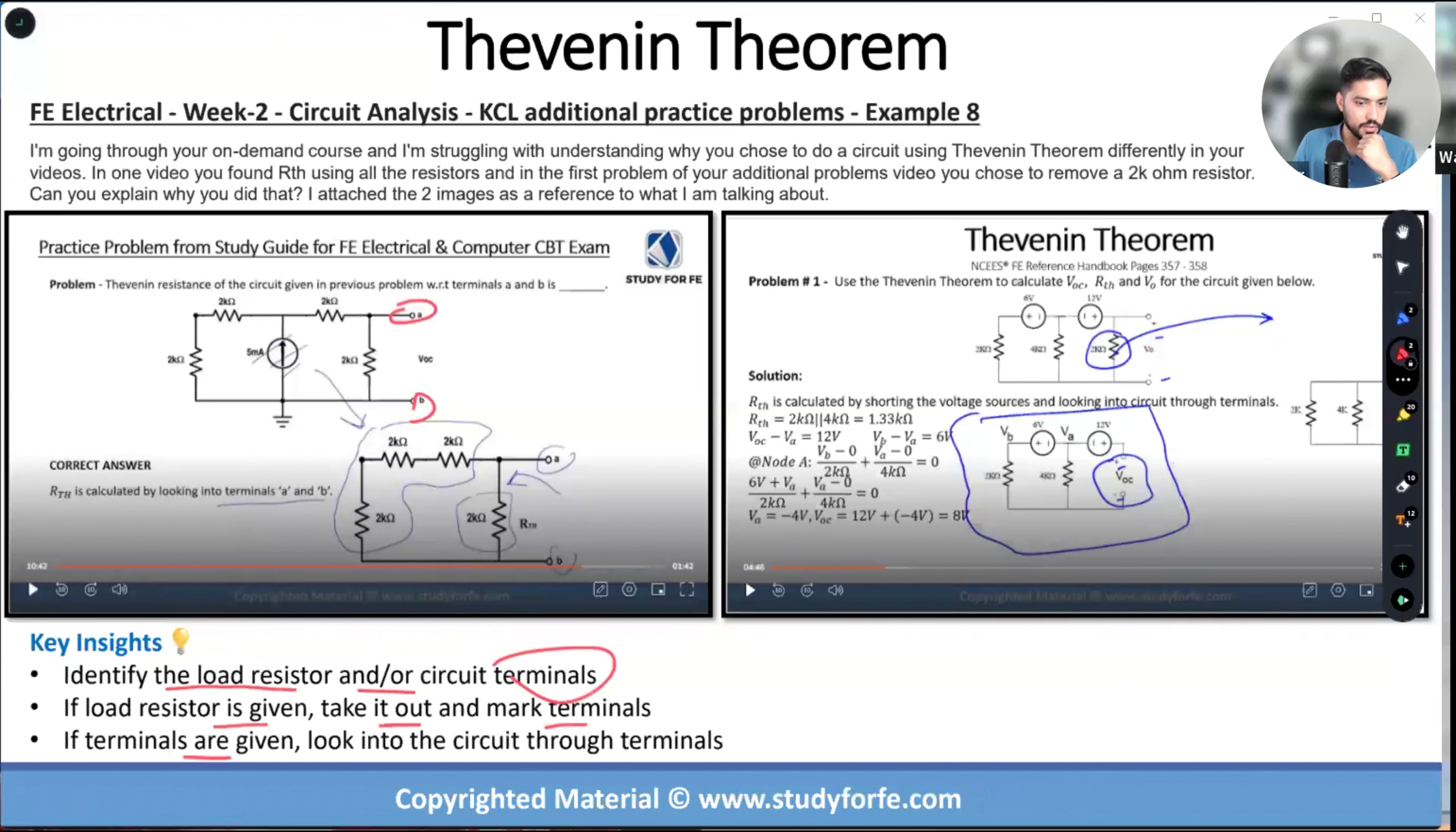If load resistor is given, take it out and mark the terminals. If terminals are given, look into the circuit through the terminals. If you know that this is the boundary of your Thevenin circuit and anything extra can be connected, then this is your Thevenin circuit which you have to solve. You don't need to take anything out of it. But if the circuit is given to you with an R output or R load connected, then you need to clearly identify the limits of the Thevenin, and that is done by actually taking this R Thevenin out.